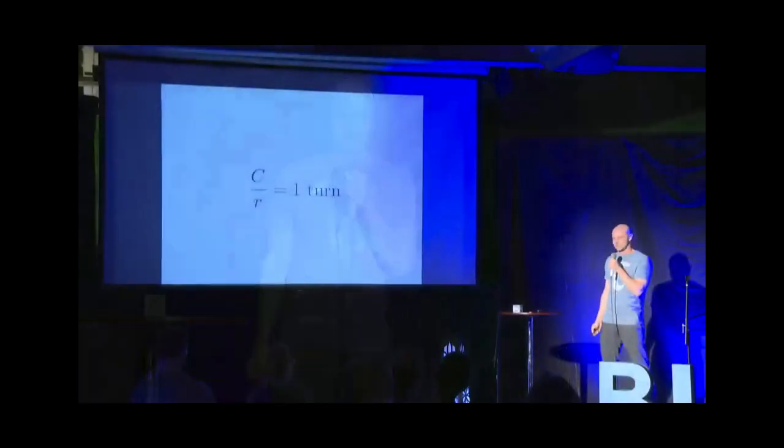Now, Palais introduced this idea of c over r being one turn, like a full turn of a circle. But he didn't really give it a name other than this, and he proposed a symbol that was, I think, not even very serious. It was a little strange, and it didn't really catch on.